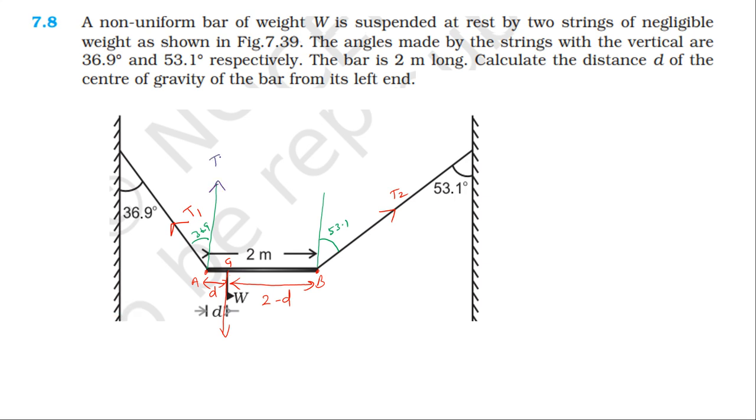T1 cos 36.9 degree. The x component is T2 sin 53.1 degree. Approximately cos 53.1 degree is 3 by 5, cos 36.9 degree is 4 by 5. Sin 36.9 degree is approximately 3 by 5. Sin 53.1 degree is approximately 4 by 5.